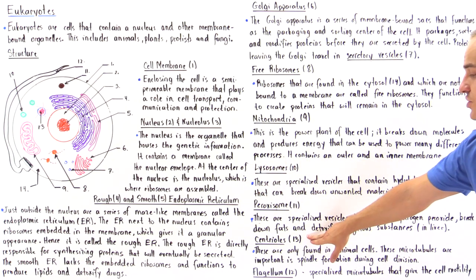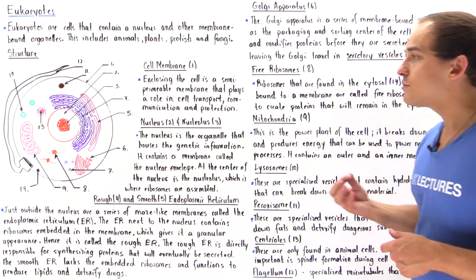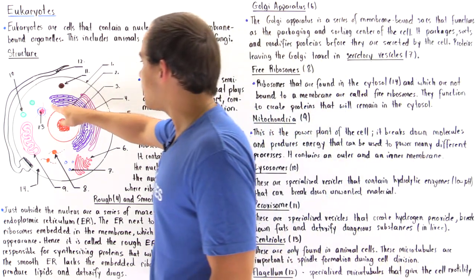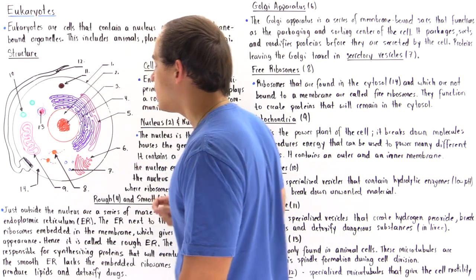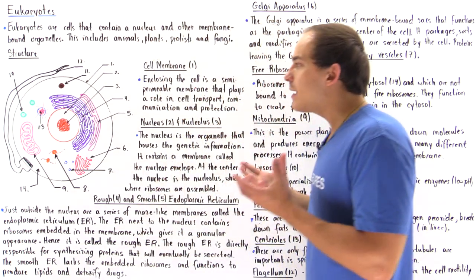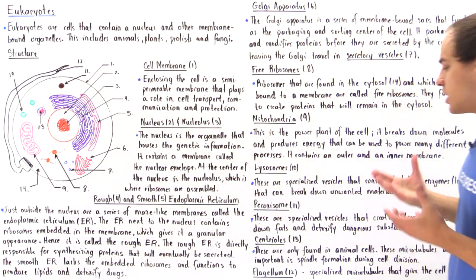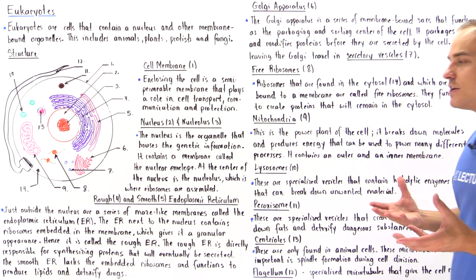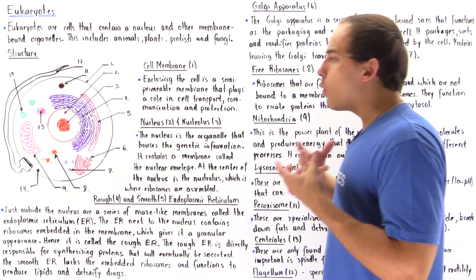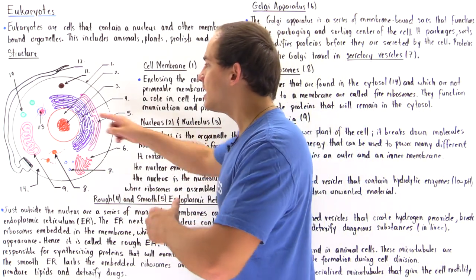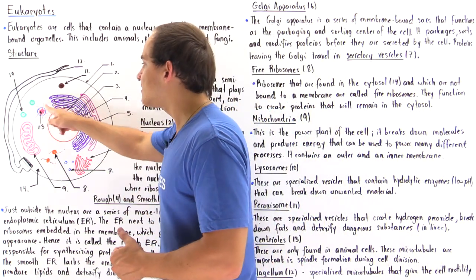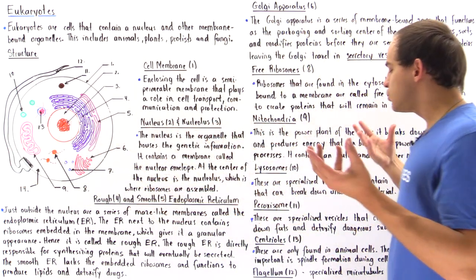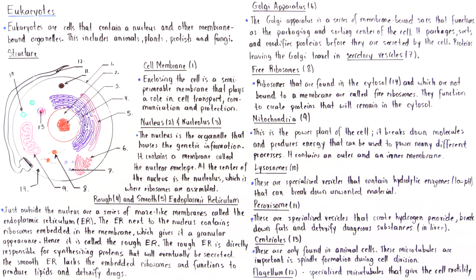Next are the centrioles. The primary function of centrioles is during cell division — when the cell decides to divide, centrioles help to separate the cell into two different cells.